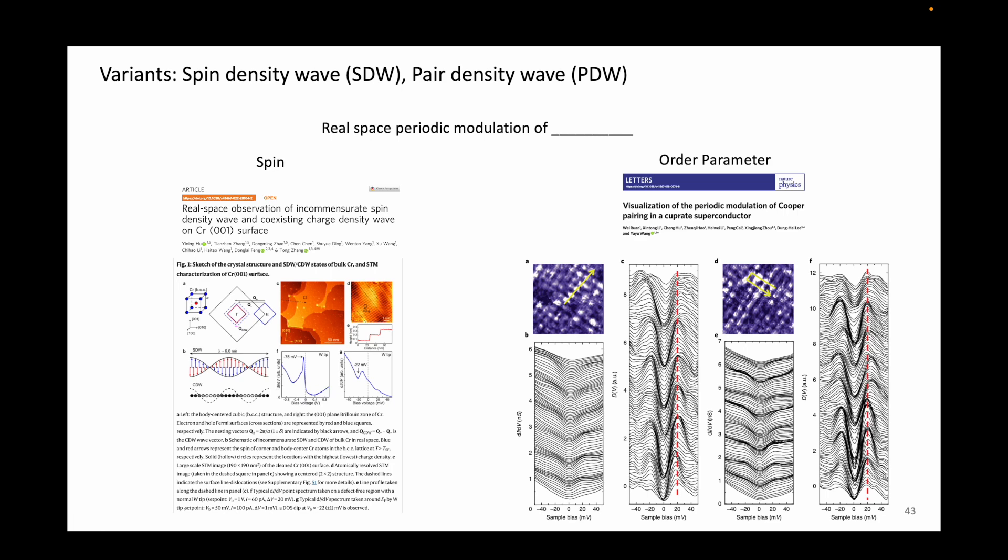In systems with pair density waves, the order parameter has a spatial modulation. This is special to nodal superconductors, such as cuprates, which have D-wave pairing.